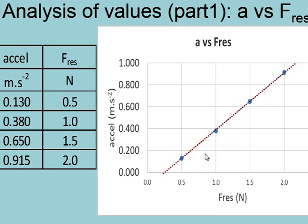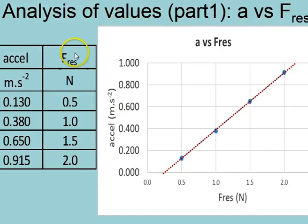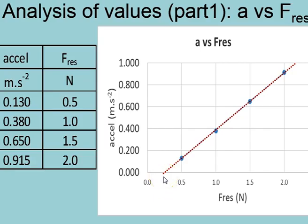However, if we draw the best straight line and extrapolate back to zero, we find it doesn't go through the origin. Why not? Well, there is friction in this setup and we haven't compensated for it. So whilst a half a newton force is hanging, it isn't the resultant force. And this intercept on the x-axis is the best approximation we have for the friction.